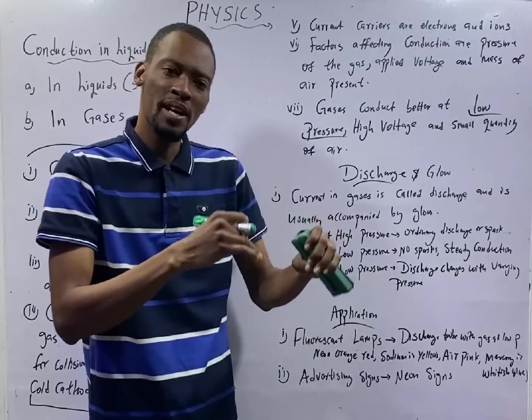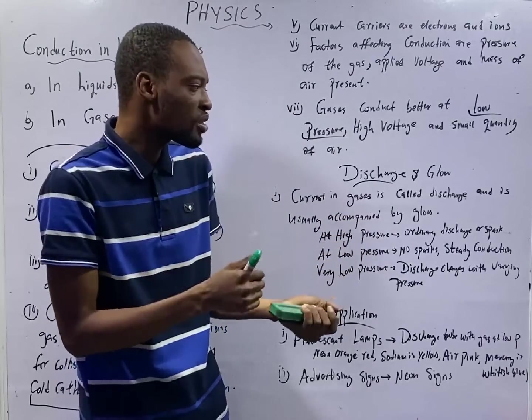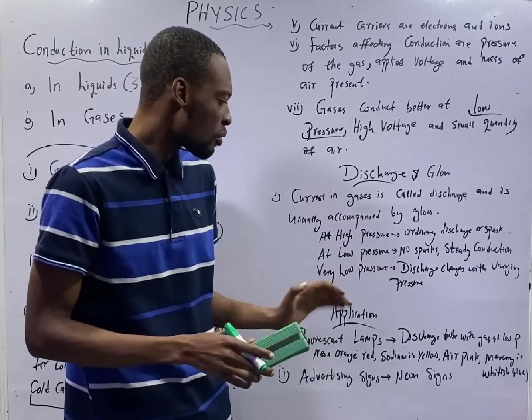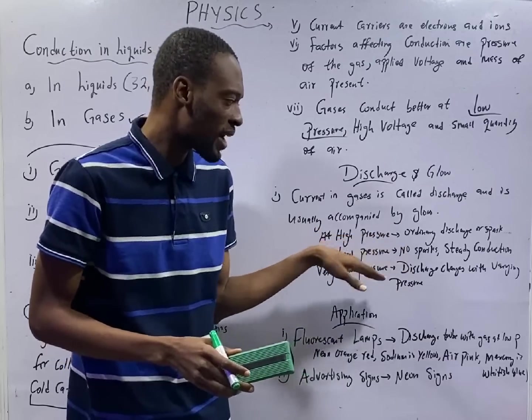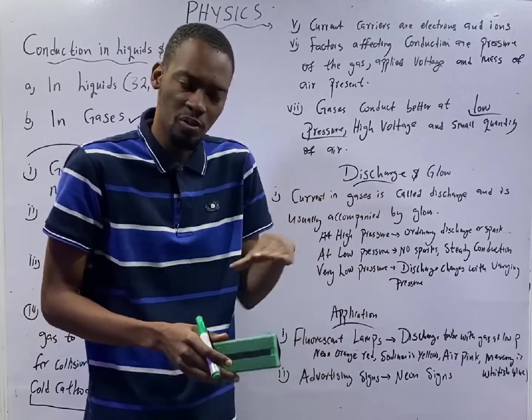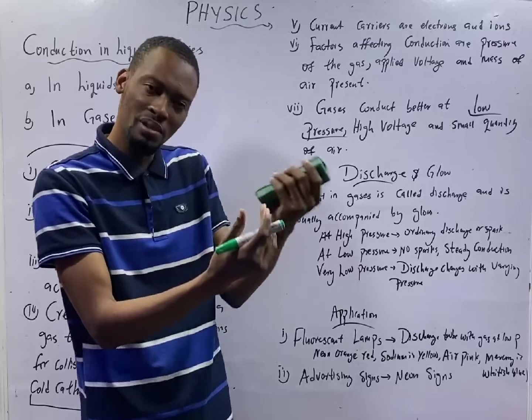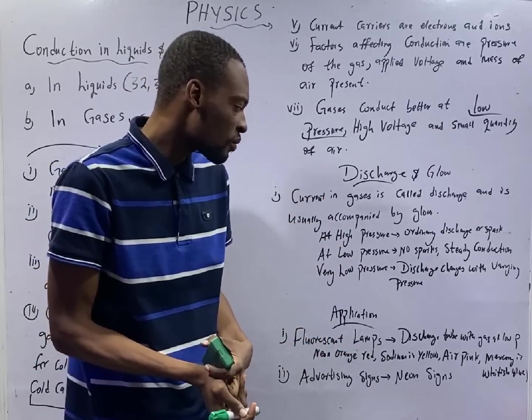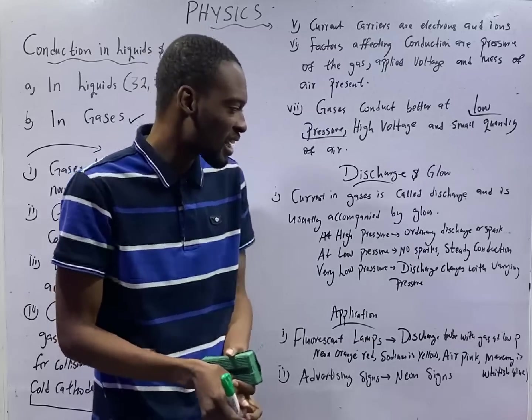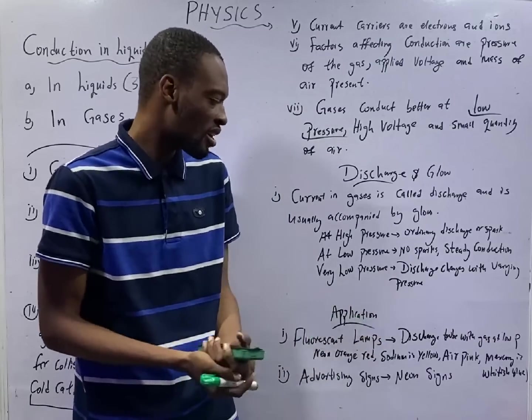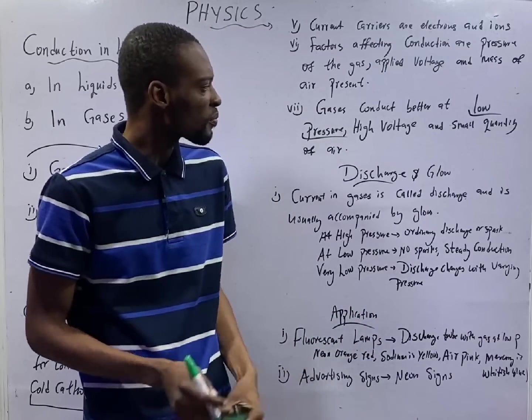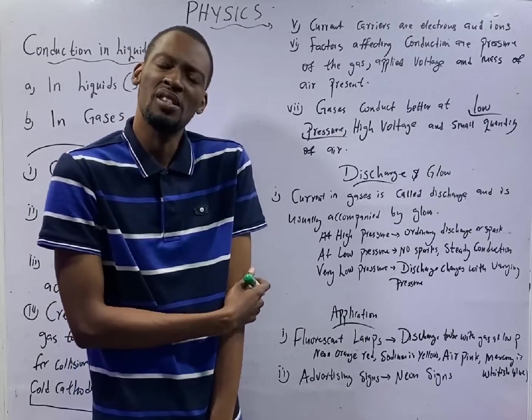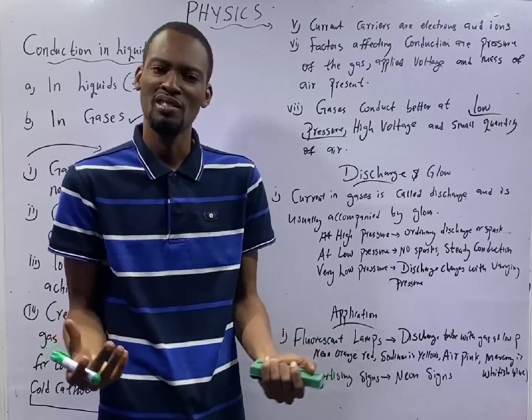And if the pressure is high, there will be sparks, just ordinary discharge and sparks. But at low pressure, there is no spark. You will see steady conduction and you begin to see glow. It begins to glow. So discharges at low pressure, you see discharge that vary with pressure. Discharges in gases vary with pressure. Trust me, this is a very interesting phenomenon. And the applications are things that you know, and they are beautiful.